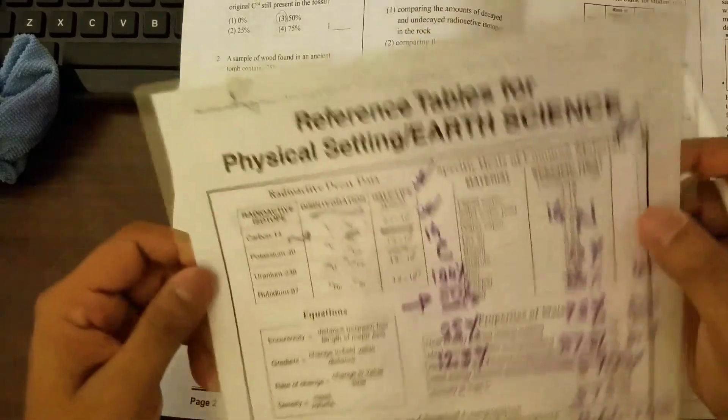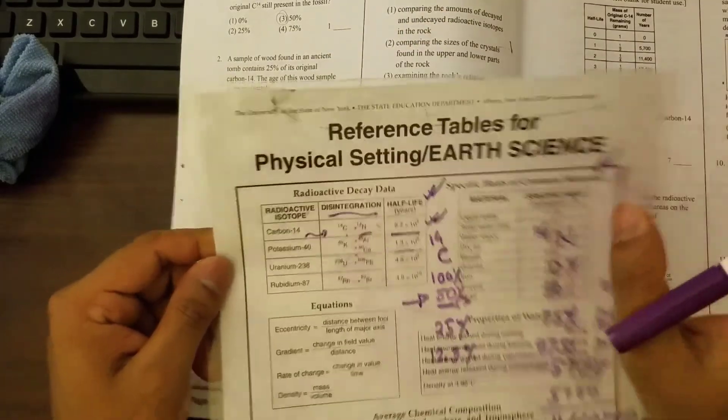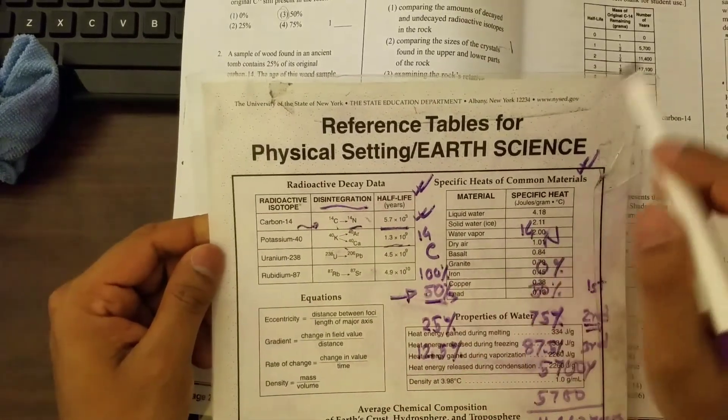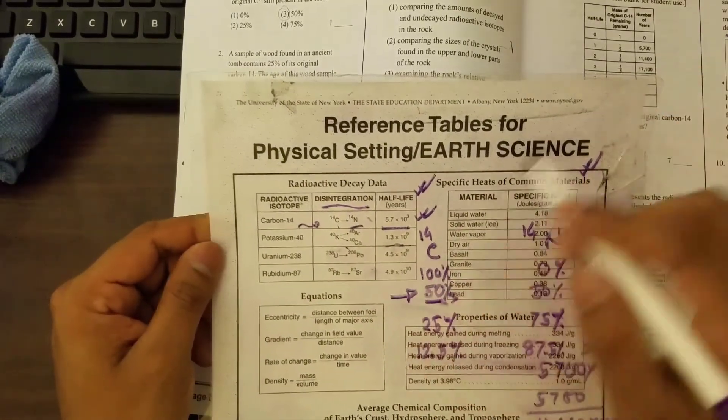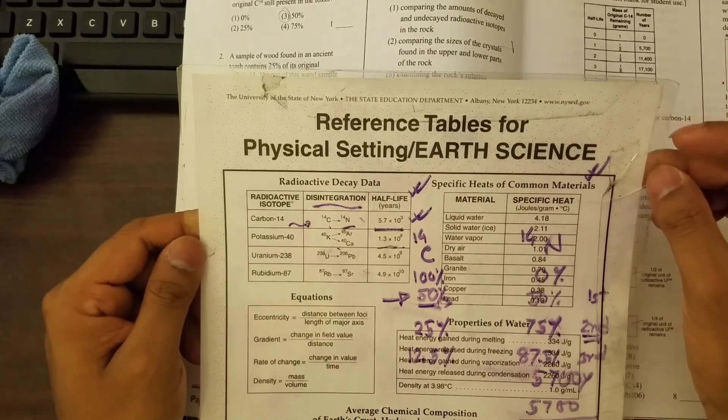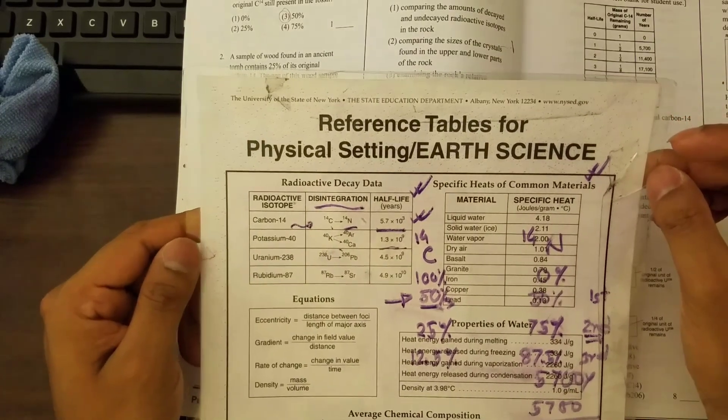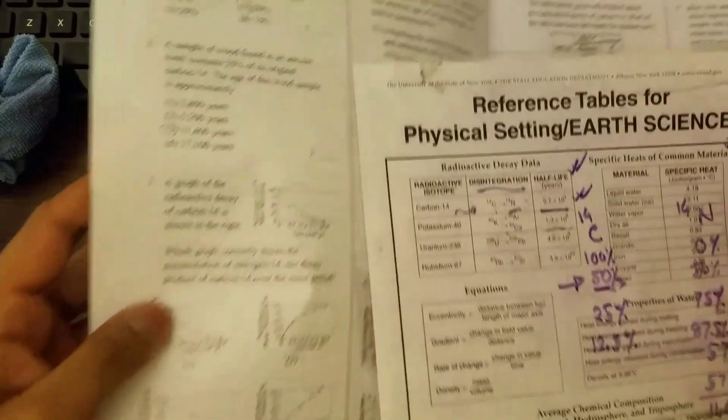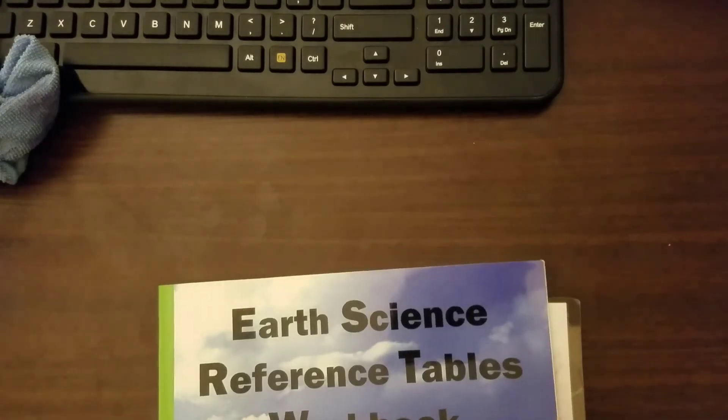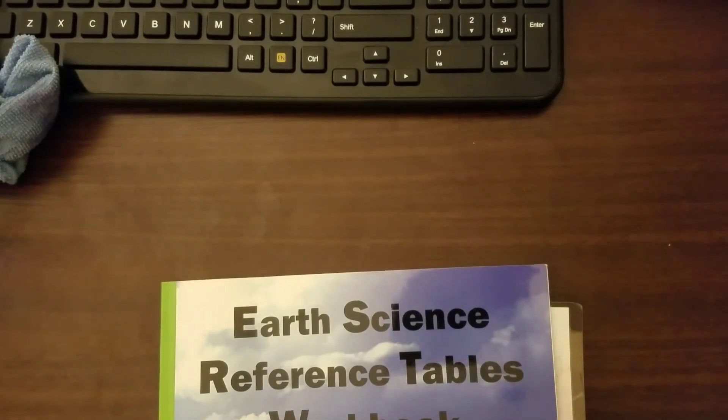So that's all about radioactive decay data. So I hope you understand half-life, disintegration, and the elements that are changing and becoming non-radioactive elements. So that's it for today, everyone. I'll see you next time with another topic. Thank you. Bye.